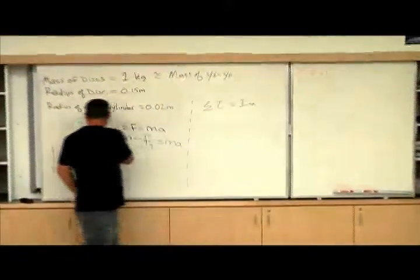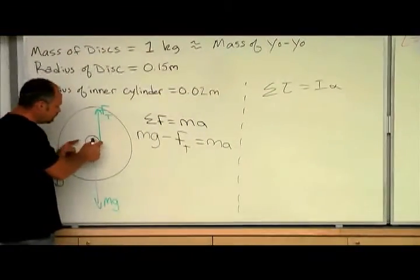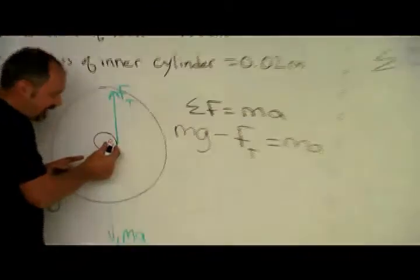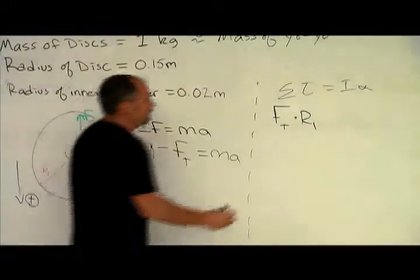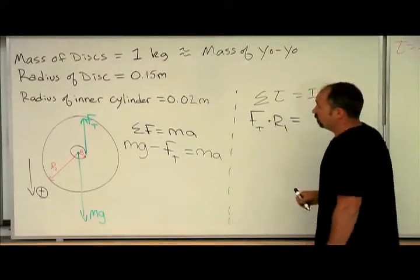Now, the tension of the string is at some distance from the rotation axis. So it does supply a torque. So we have the tension force times r1, because that's this distance here, and that equals the moment of inertia of the yo-yo.